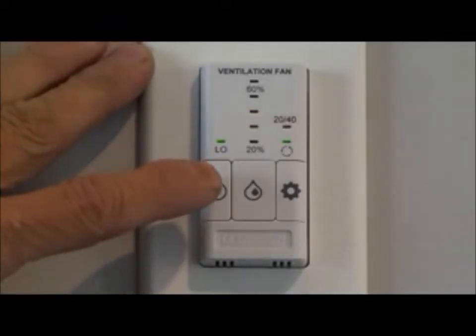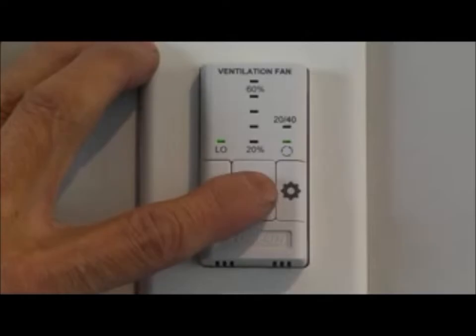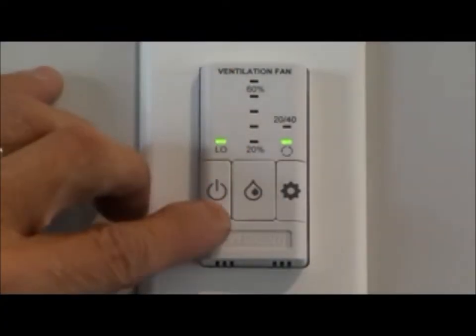When you turn your controller on for the first time, it is very important that if we are in the spring, summer, and fall months, that we disable the humidity controller, the middle button. And in order to do that, you just need to raise it until the blinking stops and we have now disabled the use of the humidity controller.